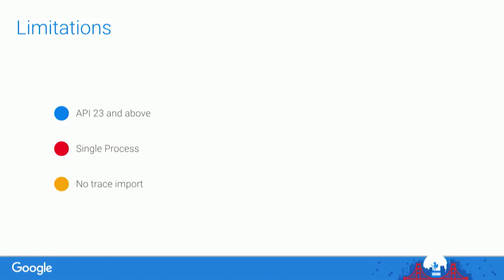Limitations: there's a limitation on API 23 and before. It only runs on a single process for now, but that will be lifted. You can export traces, but you can't import traces yet — that's going to be fixed. It's a work in progress, as everything we do.